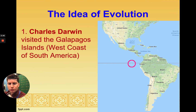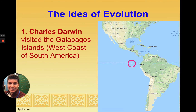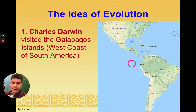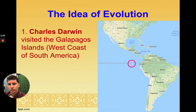Charles Darwin was originally going to college to be a physician like his father. However, he decided to drop out of becoming a doctor and actually studied theology instead, so he was trying to become a religious person. While he was in school, he was able to go to the Galapagos Islands.